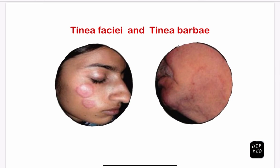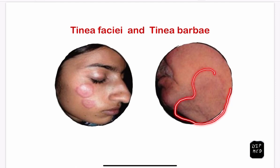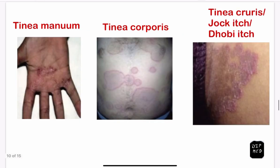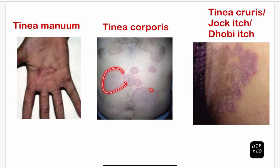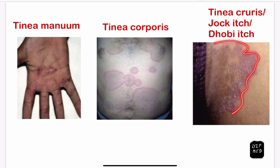Here are other types of dermatophytosis. Tinea faciei involves infection of the face. Tinea barbae infects the beard region. Tinea manum infects the palm areas. Tinea corporis affects the trunk. Tinea cruris, also known as jock itch or dhobi itch, is the infection of the groin areas.